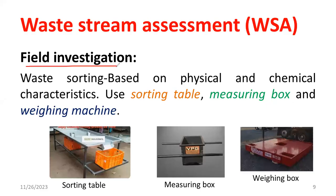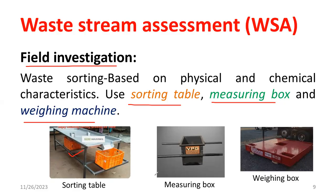Field investigation uses different methodologies. We use a sorting table, especially at transfer stations, and measuring boxes to identify what kind of waste is produced in a particular territory, along with weighing machines. We can separate different types of waste using manual or automated methods. For weighing, we can use a load cell — a transducer that measures the weight of waste directly. These are the major aspects of field investigation.